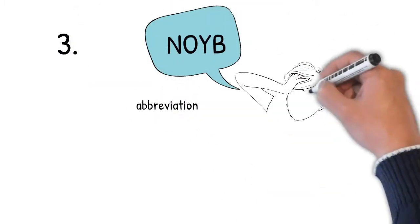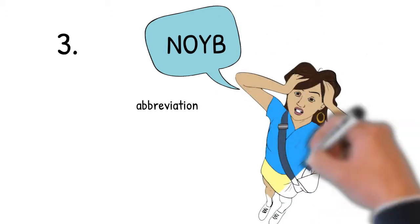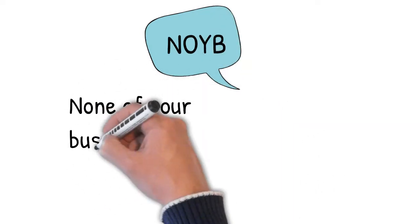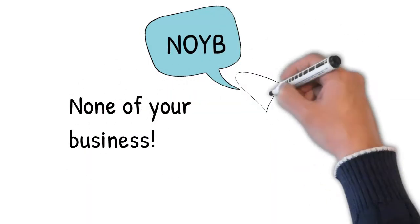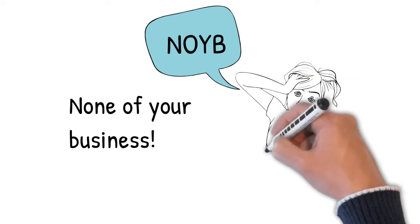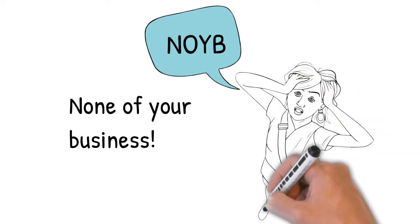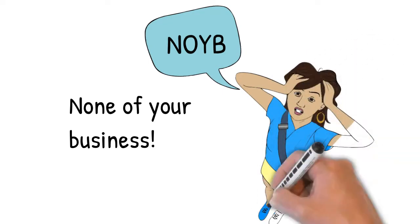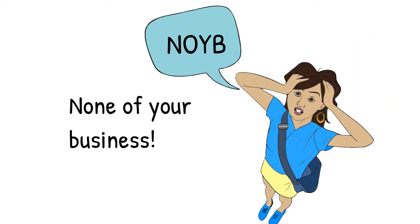Text number three, what do you think the abbreviation NOYB stands for? It stands for none of your business. Now you would text that to a friend, this is casual informal language you don't really text that to your boss, but you would text this to your friend or family member and it means stay out of it, it's none of your business. You would say that if they were asking a personal question or an inappropriate question you didn't want to answer.